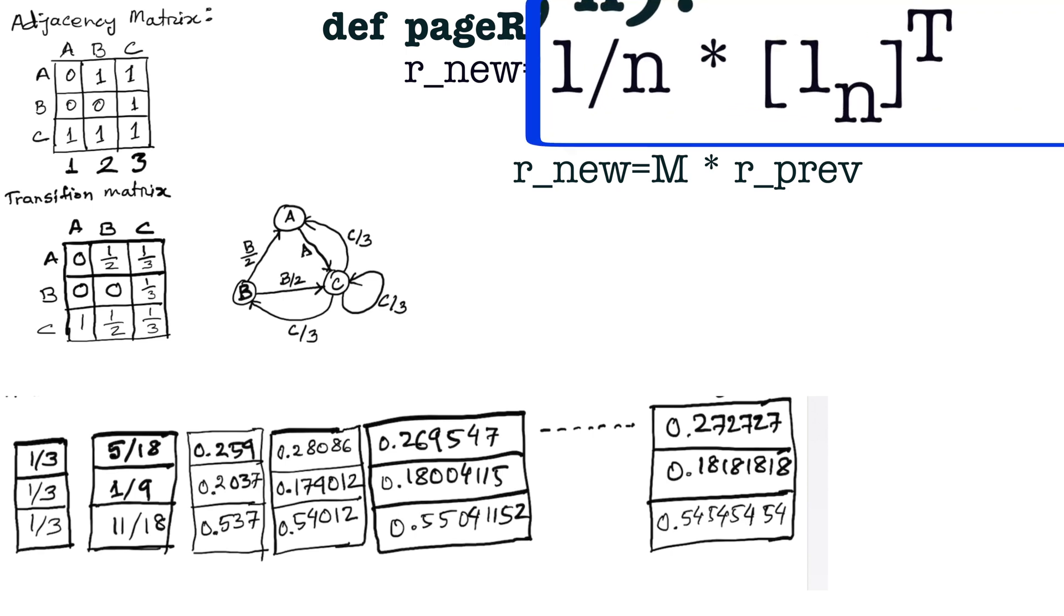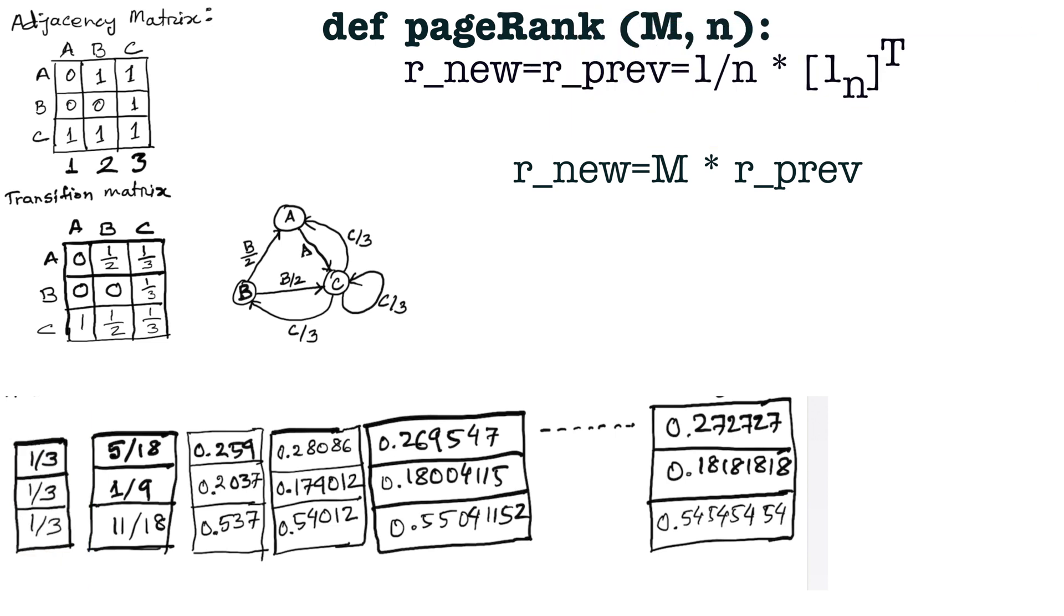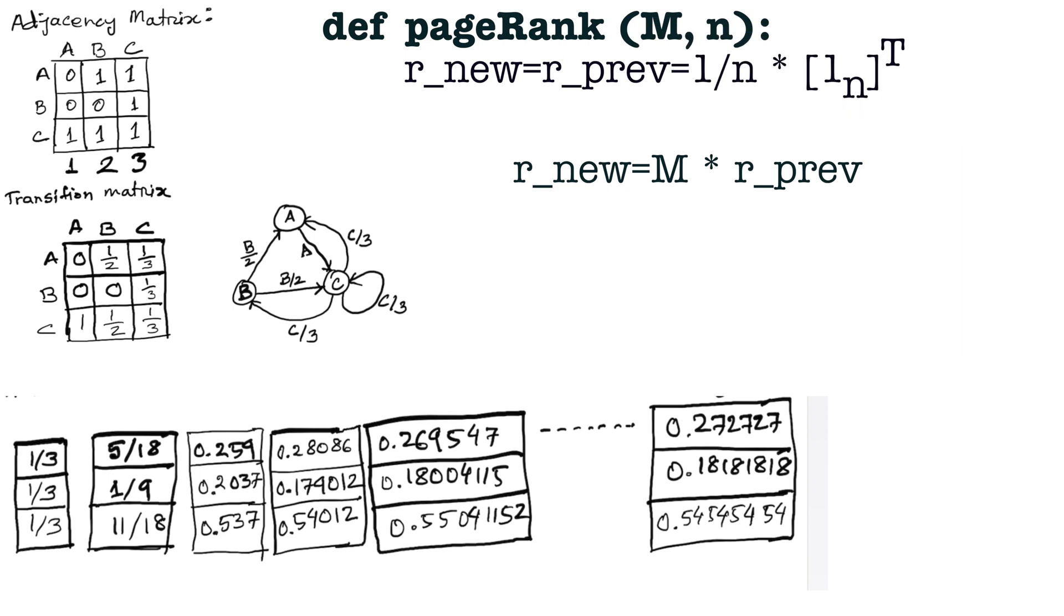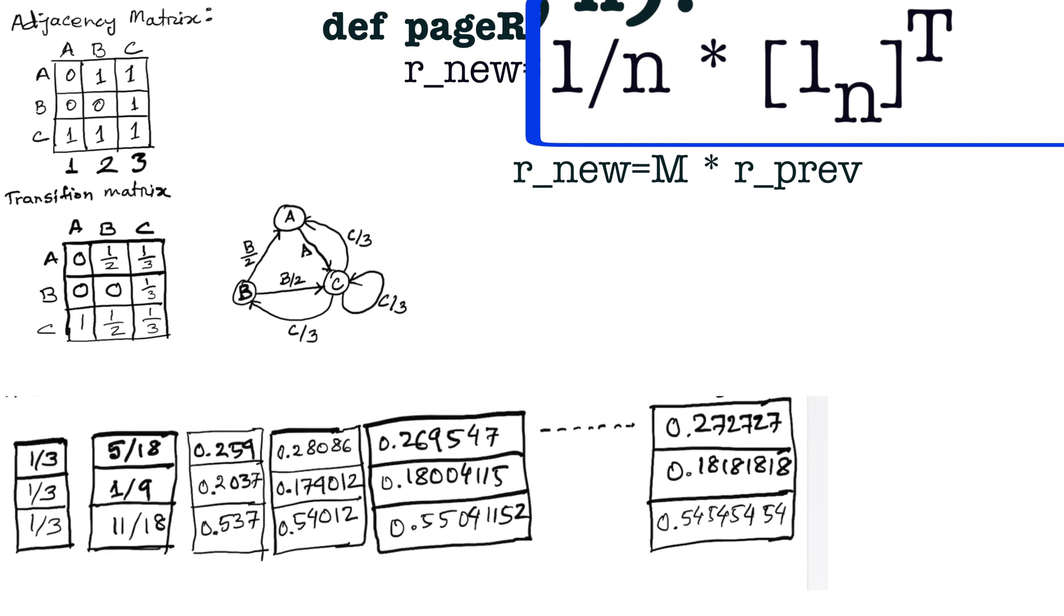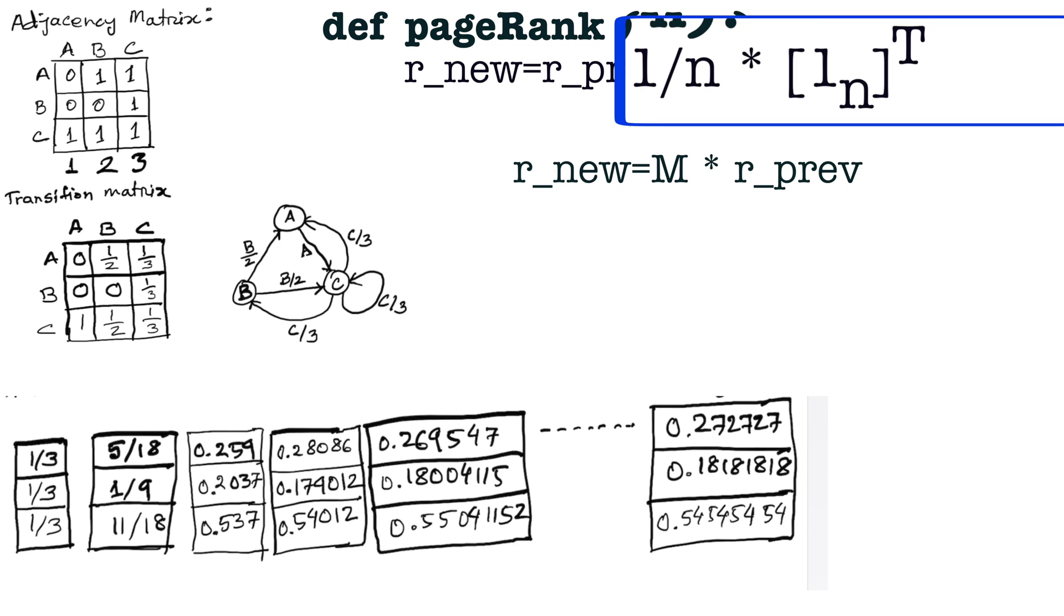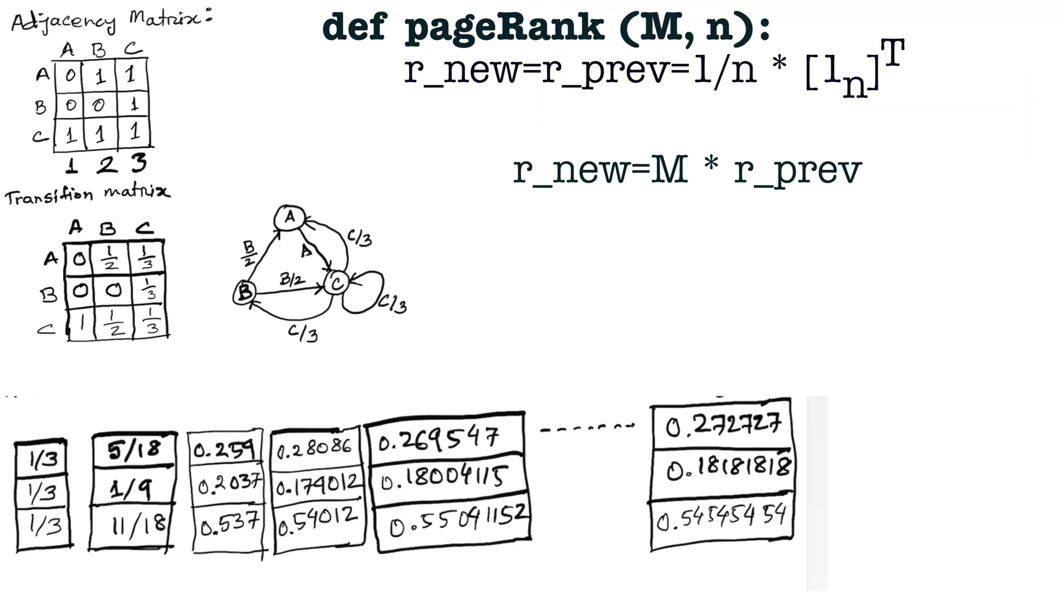For three websites, this initial rank vector will contain one over three, one over three, and one over three. For four websites, this column vector will contain four 0.25s. For five web pages, the initial rank vector will contain five 0.2s, and so forth. For the initialization it does not matter what r_new has; we just need to make sure that it is a column vector. r_prev must have the initialization as shown here. Now I am writing a while loop so that the multiplication can be repeated. It is an infinite loop, which means I will break it somehow at some point.